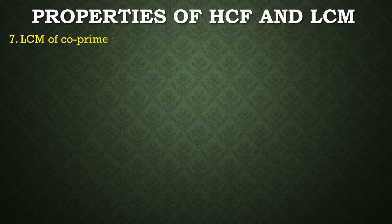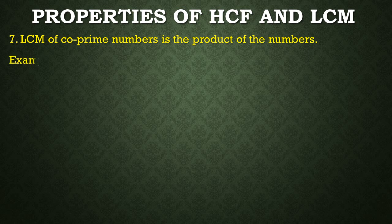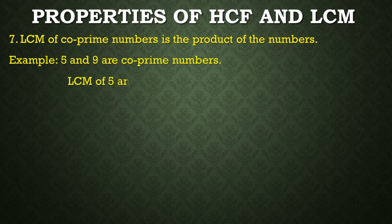Property number 7: LCM of co-prime numbers is the product of the numbers. For example, we know that 5 and 9 are co-prime numbers. So the LCM of 5 and 9 is equal to 45, because 5 nines are 45.